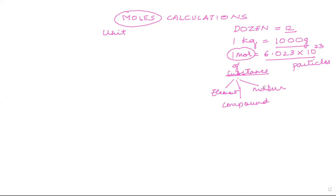If you're talking about elements, the particles are atoms. So one mole of an element means 6.023 × 10²³ atoms. If you talk about one mole of a compound, then you have 6.023 × 10²³ molecules. Similarly for a mixture, you'll have that many particles of whatever the mixture is comprised of. This is the figure that comes to mind whenever we talk about one mole.